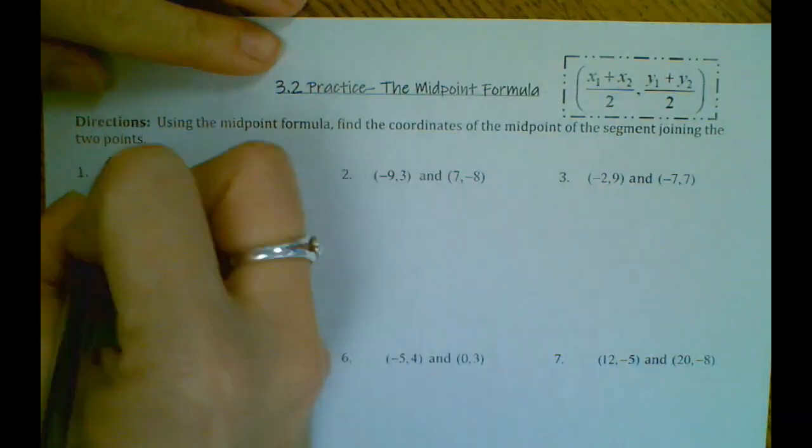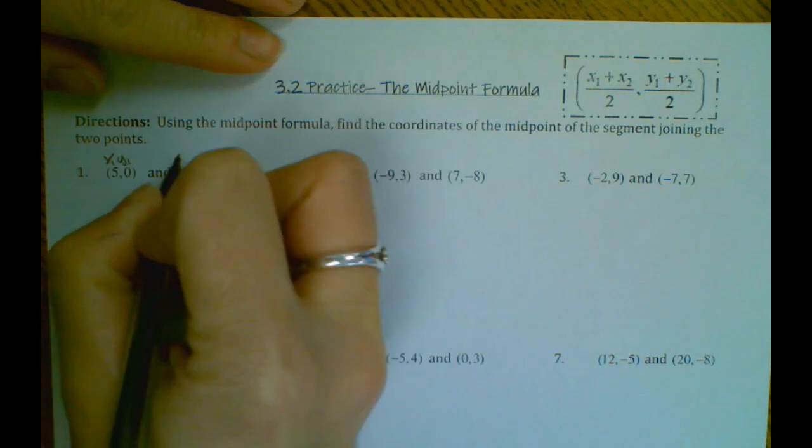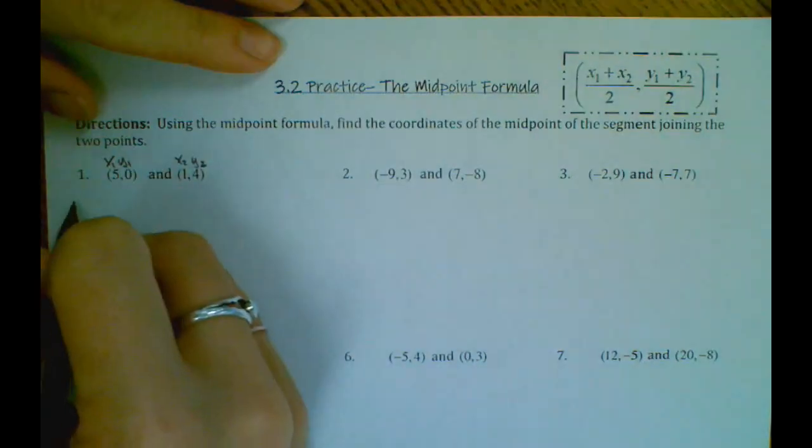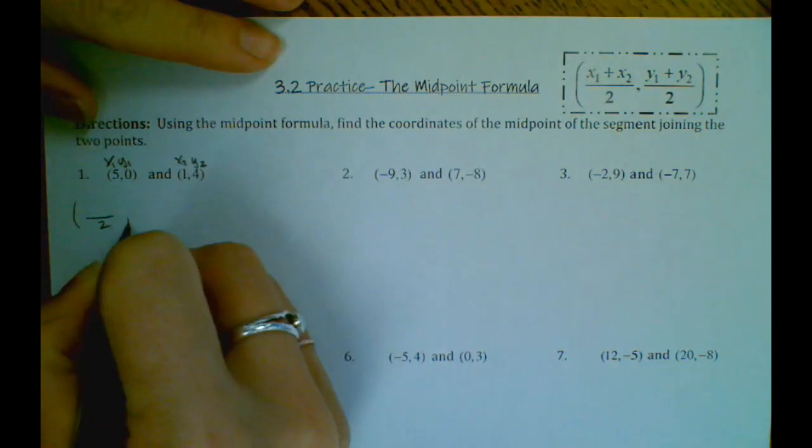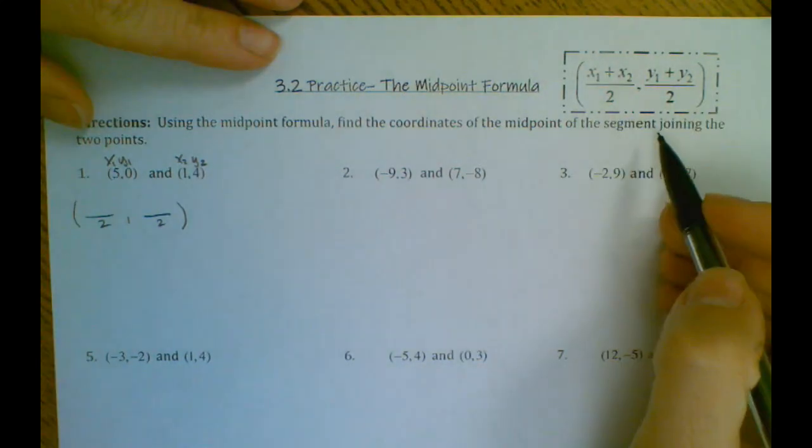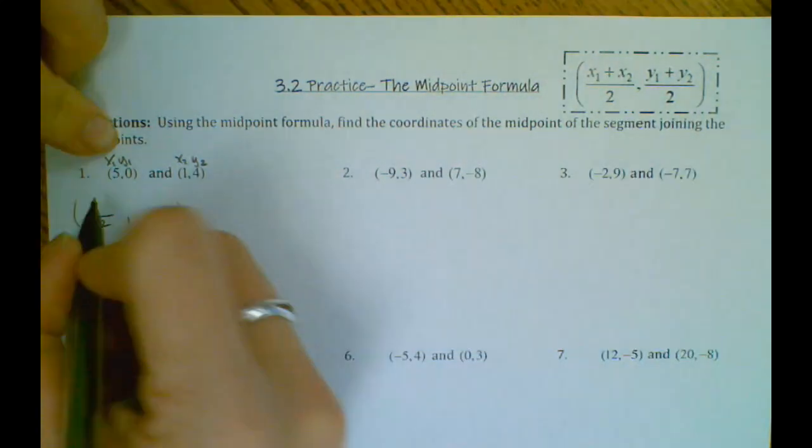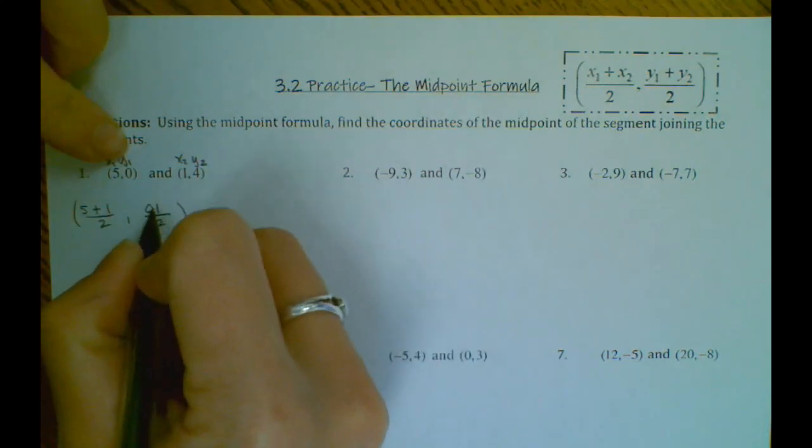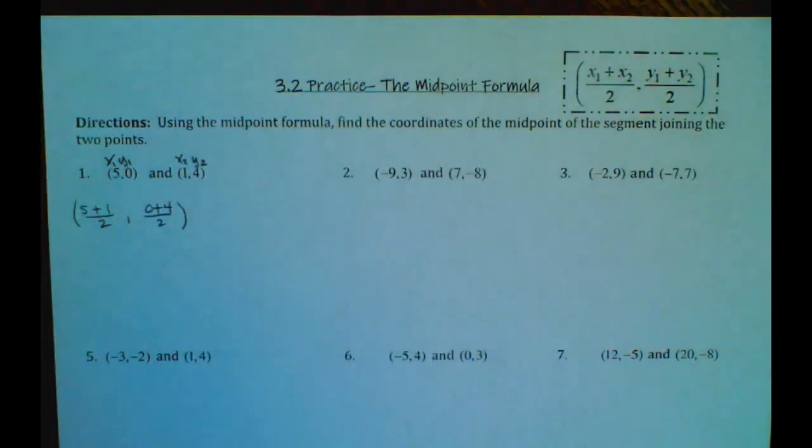Okay, so the first thing we do is we label our points x1, y1, x2 and y2. And we know that based on a midpoint formula, this is our setup. So I'll have x1 plus x2 on top, and then y1 plus y2 for the y-coordinate.